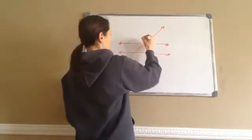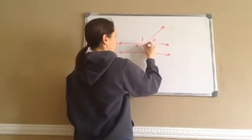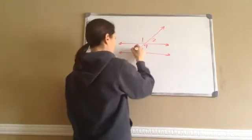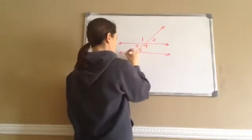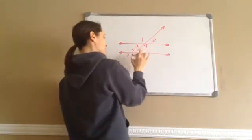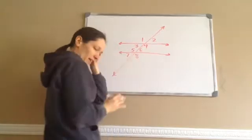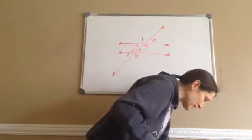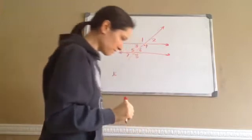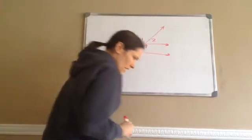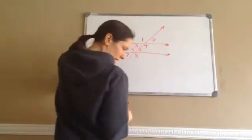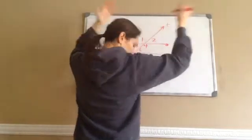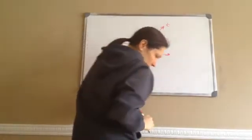Now I'm going to draw numbers: 1, 2, 3, 4, 5, 6, 7, 8. They're telling me that this is transversal T. Now I'm going to teach you about corresponding angles, so you might want to write this down in your notes.